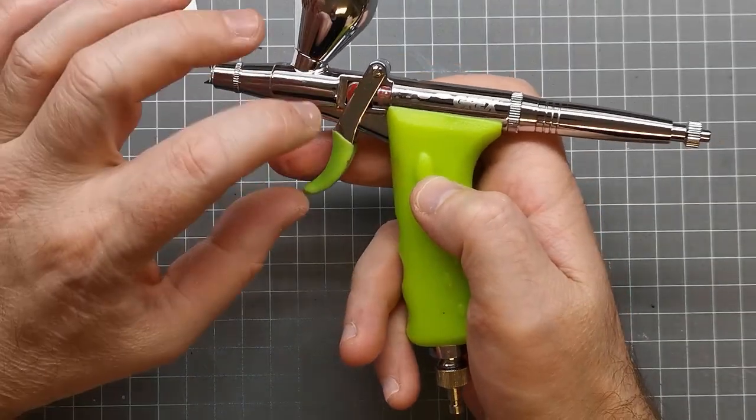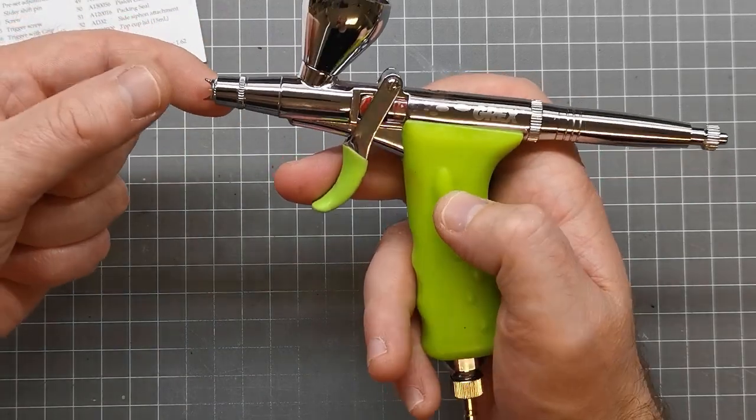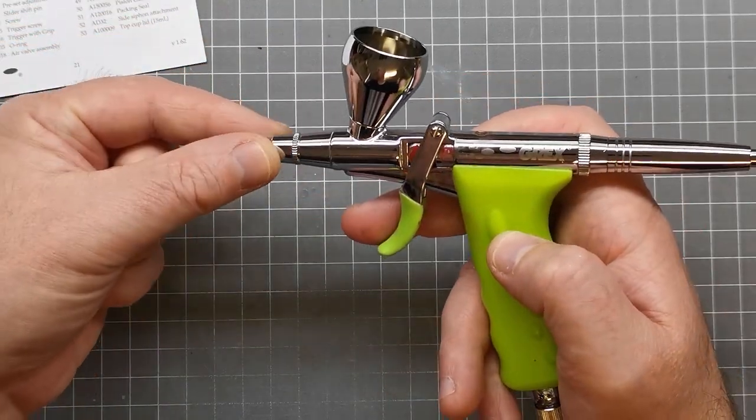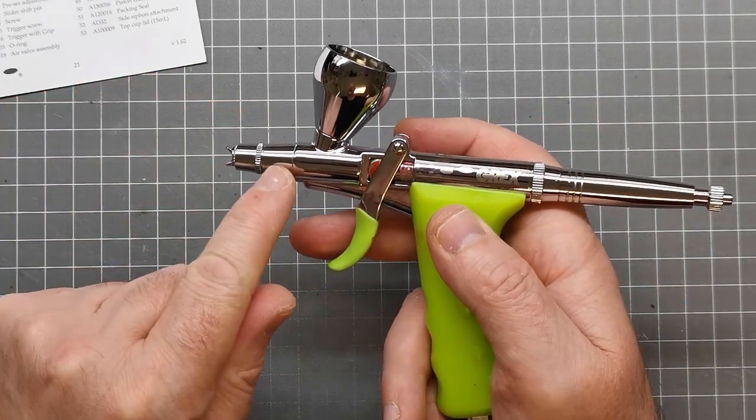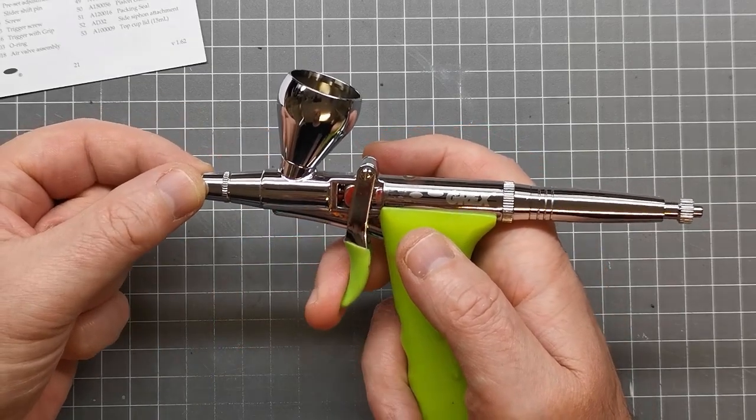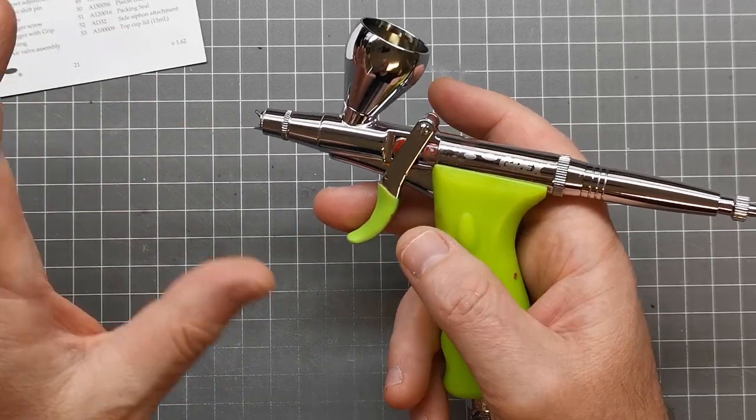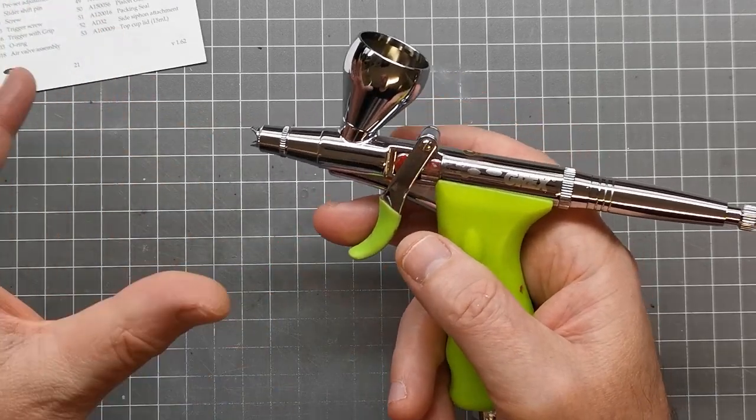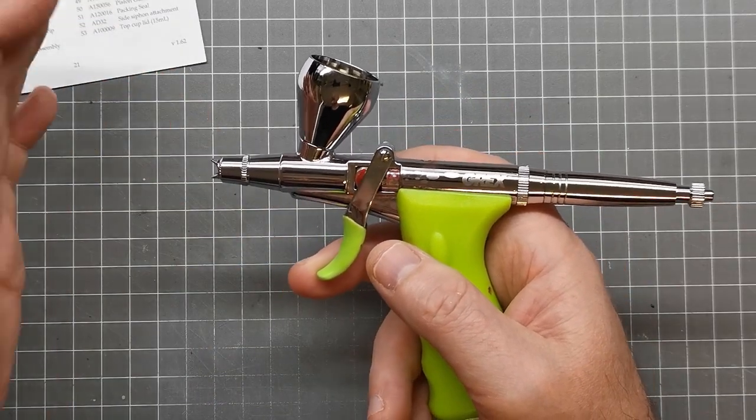Now, this happens when I do a back flush. That basically means where you pinch the end here, pull back on the trigger. The air goes back up through into the cup and helps remove any paint in the guts of the airbrush. Some people will say you shouldn't do that with the airbrush, it ruins the seals. I've been doing it for years, never had any problems.